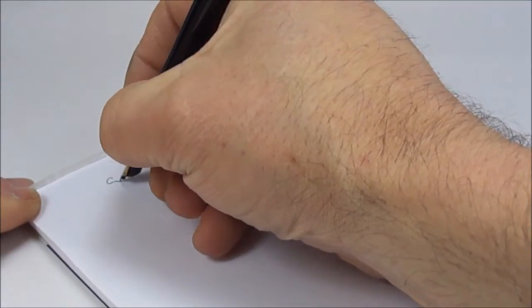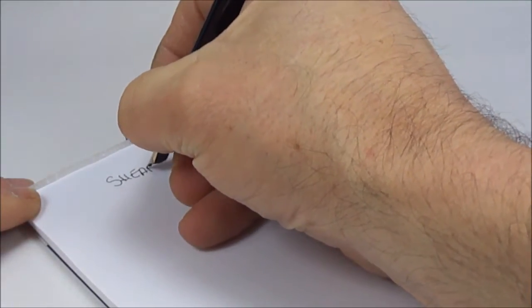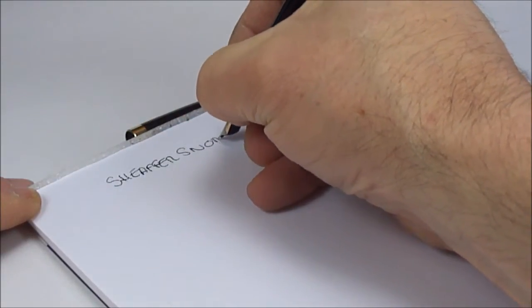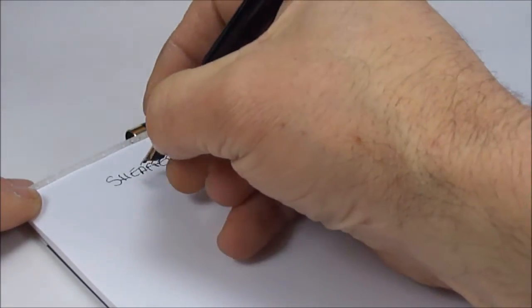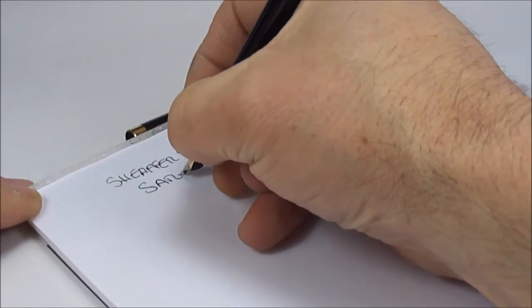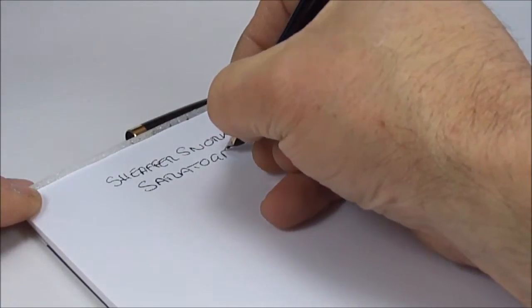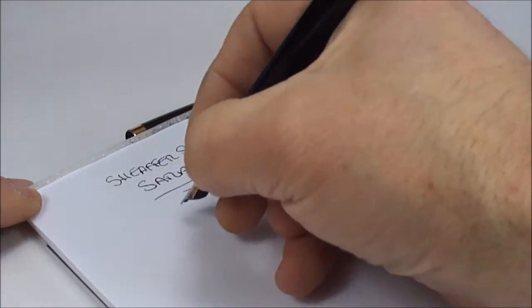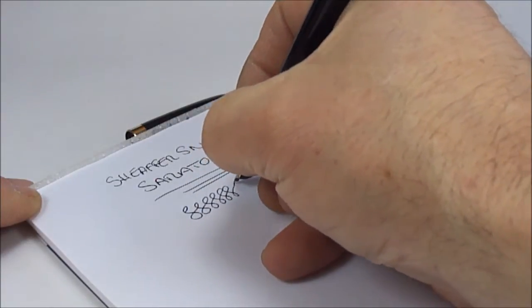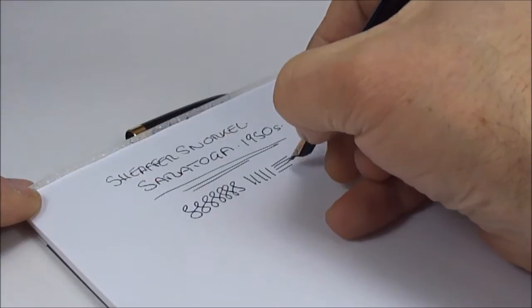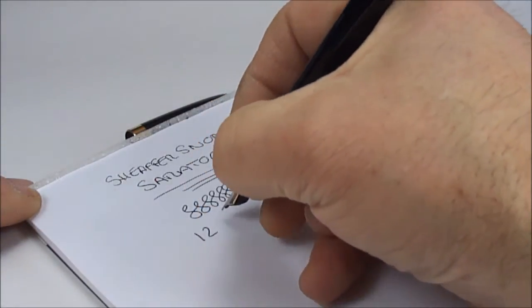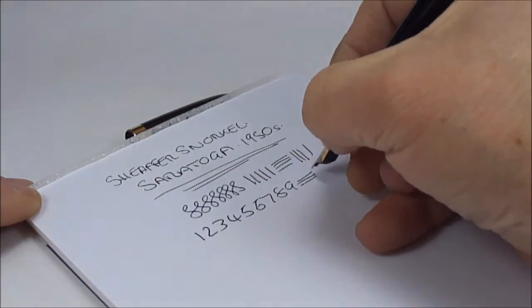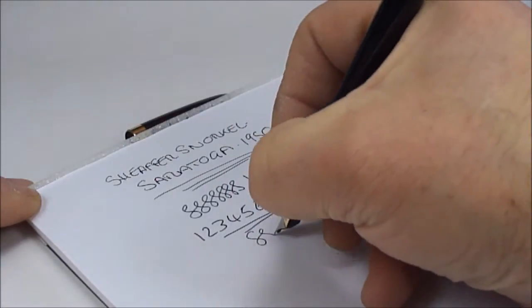So what we have is a Schaefer snorkel and as we said before this particular model is the Saratoga. We date the pen in the region of the 1950s. This particular pen is writing with a lovely fine line, there's no variation in the nib, there's no flexibility. Quite a nice smooth writer but as we said a lovely fine line.